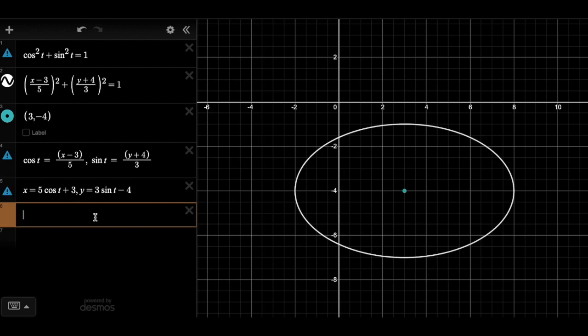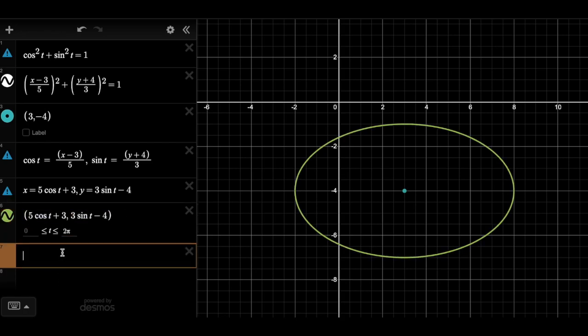So now if I go into Desmos and I graph my parametric, which remember we just use parentheses. So that's the x equation, the y equation. And you see, we've got this little lime green section over here. If I go zero to pi, we get half the ellipse, almost called it a circle. It's definitely an ellipse. And if I go the whole zero to two pi, you can see the entire ellipse.